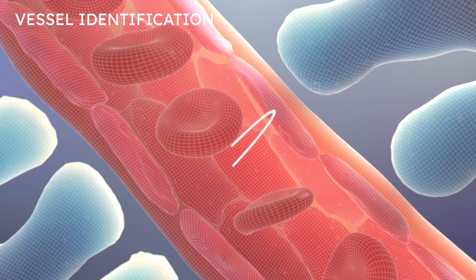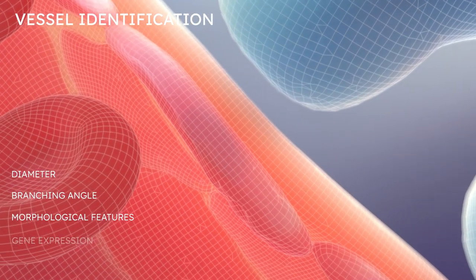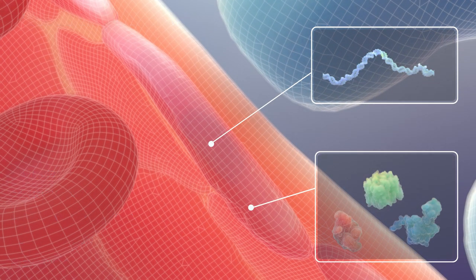Of course, blood vessels lack street signs, however, we can uniquely identify vessels through a combination of physical properties, such as diameter and branching angle, morphological features, gene expression, and other biomarkers.